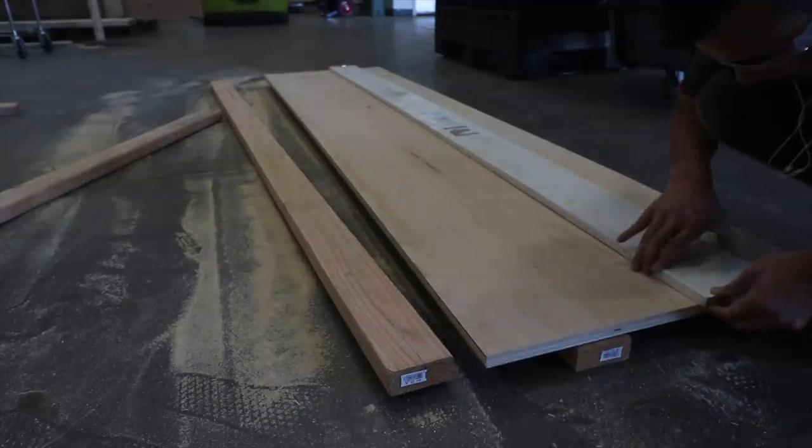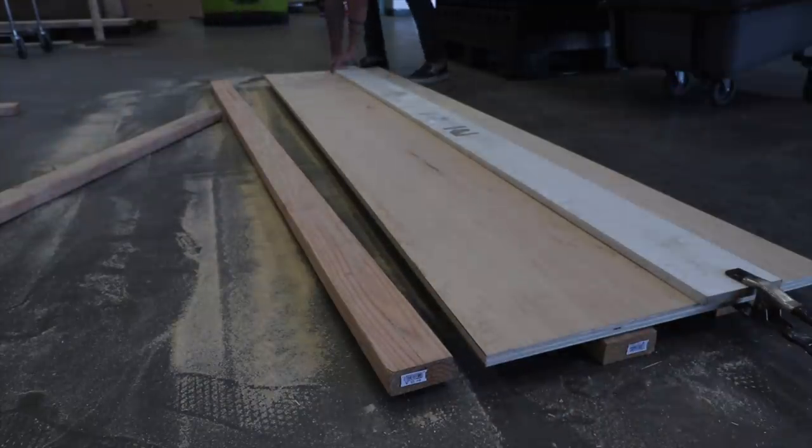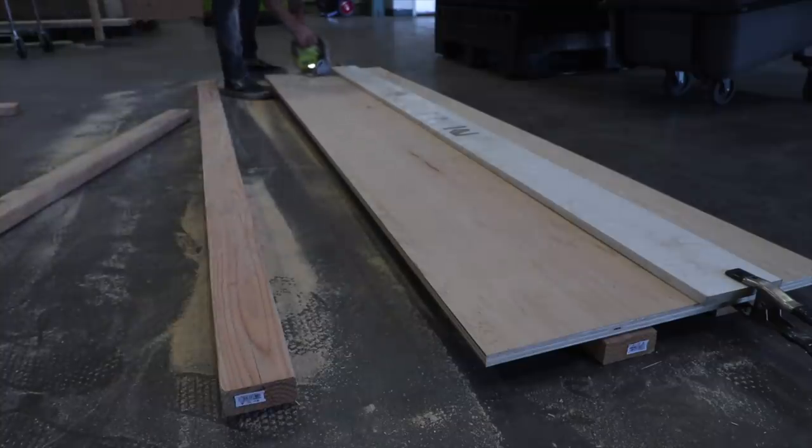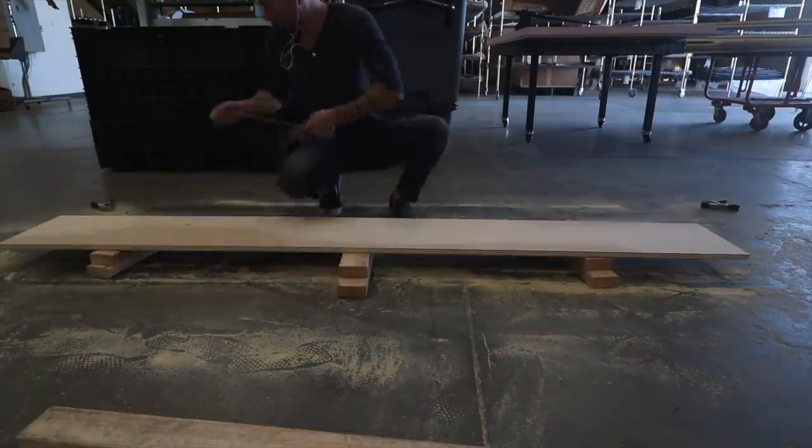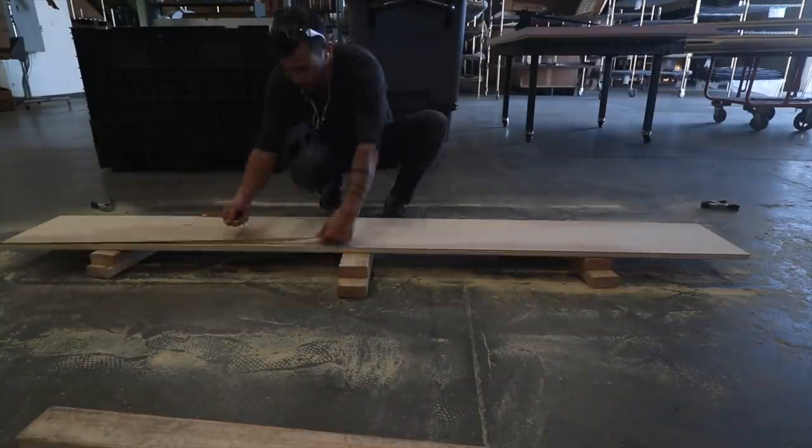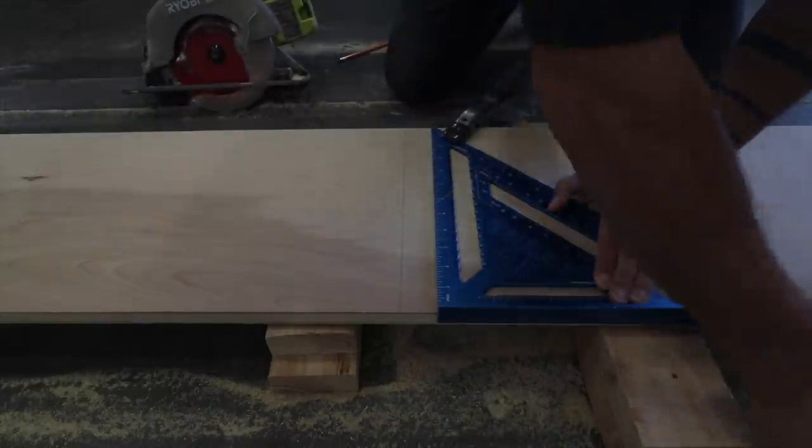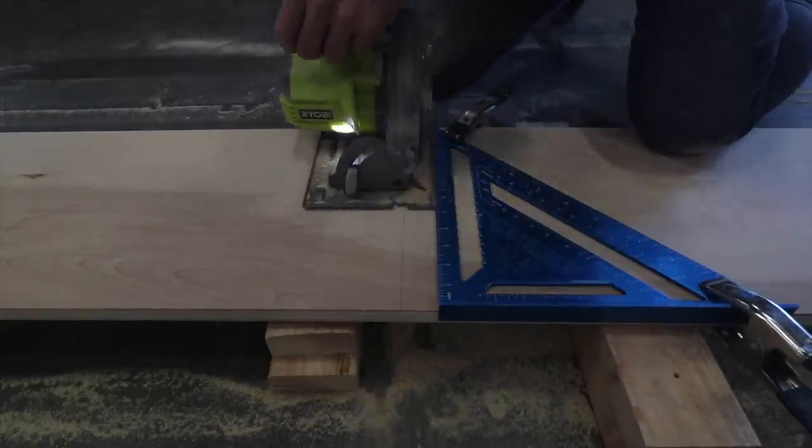I wanted the shelves to be about 12 inches deep so that they could accommodate folded clothing or books. And so I started with a series of long rip cuts to produce 8-foot-long strips of plywood that I then cut to length using a speed square and my circular saw.